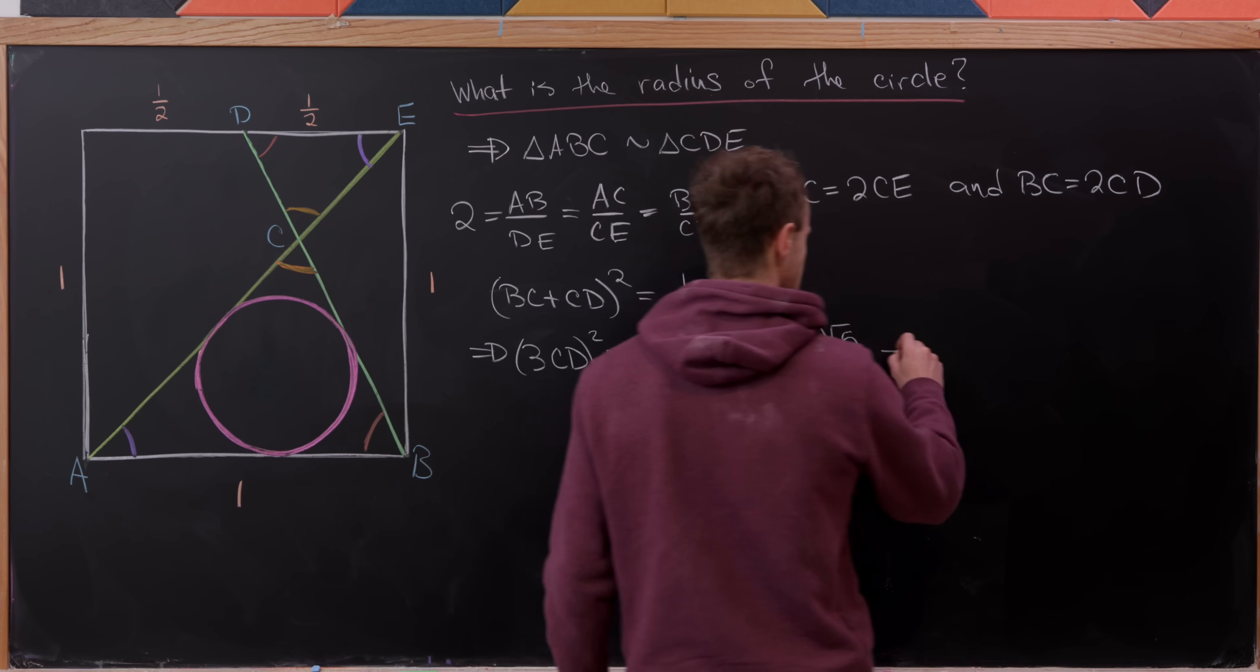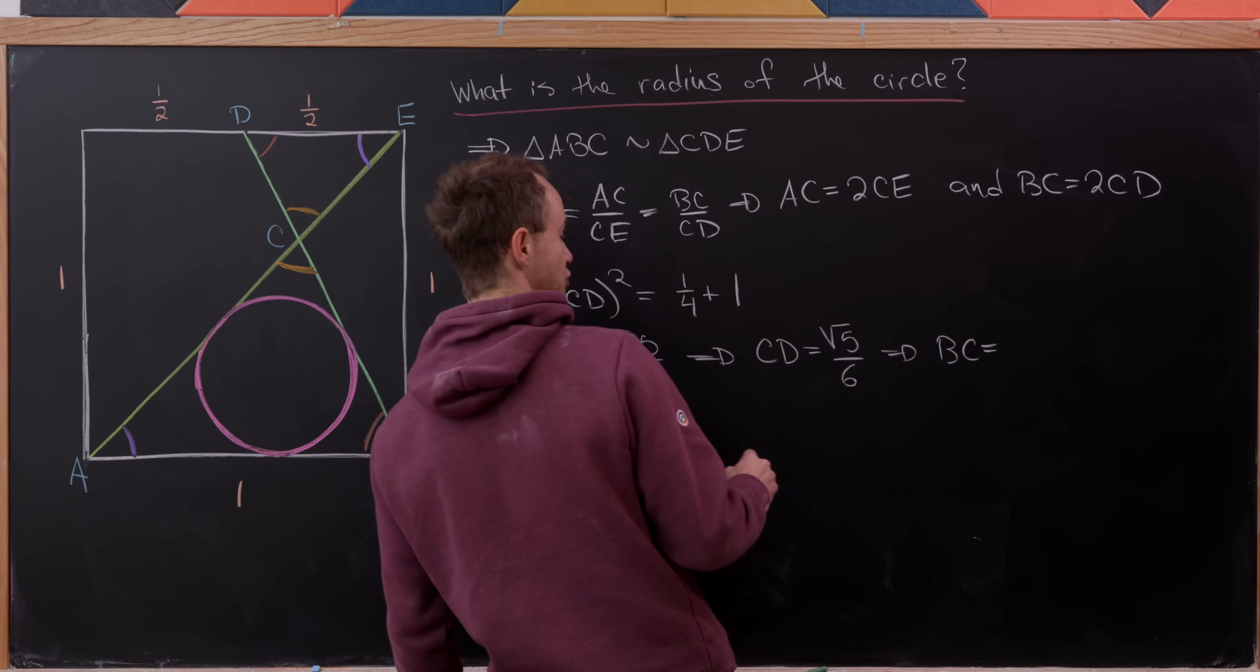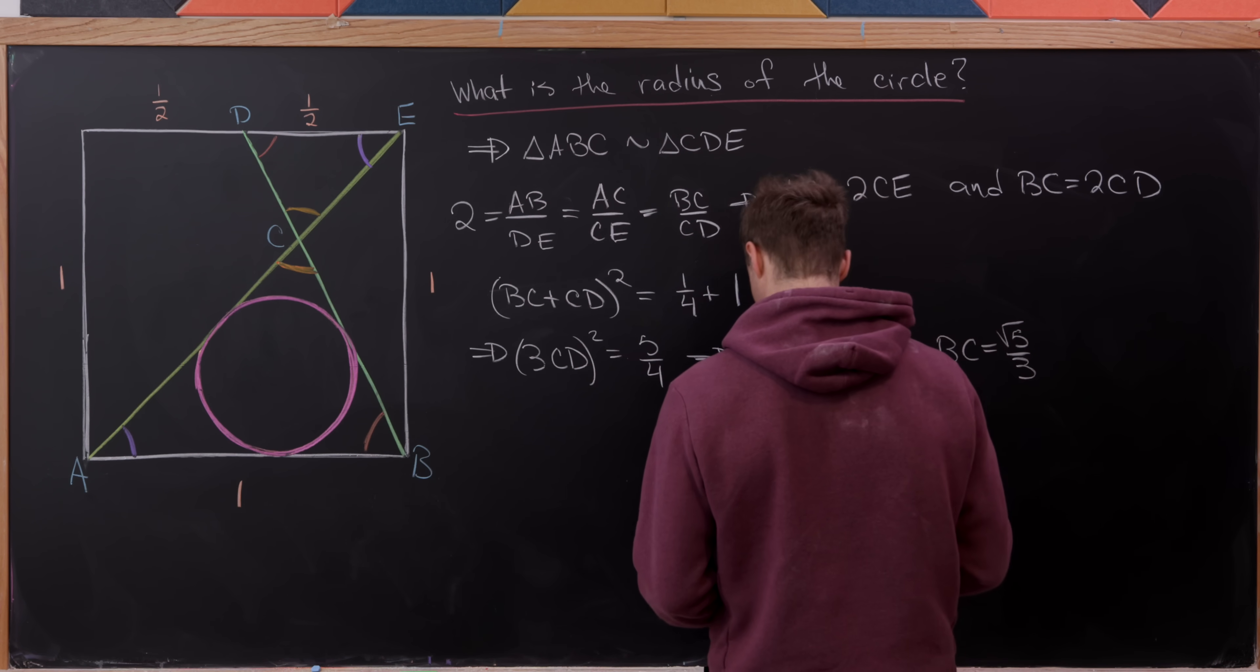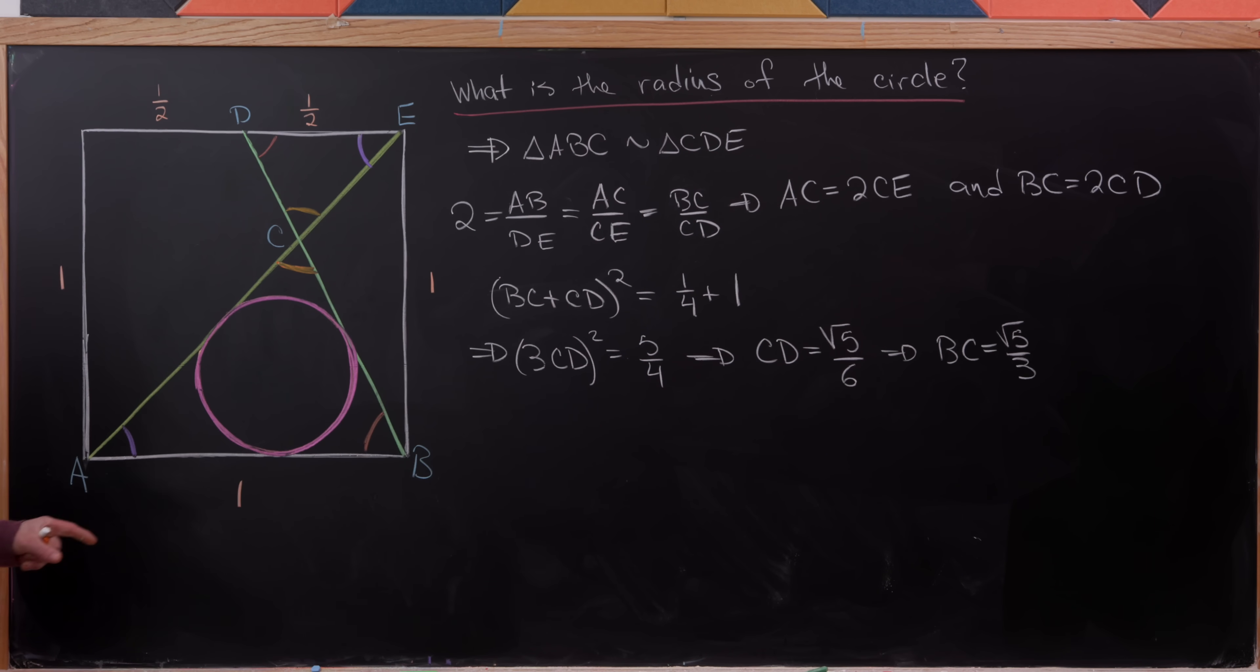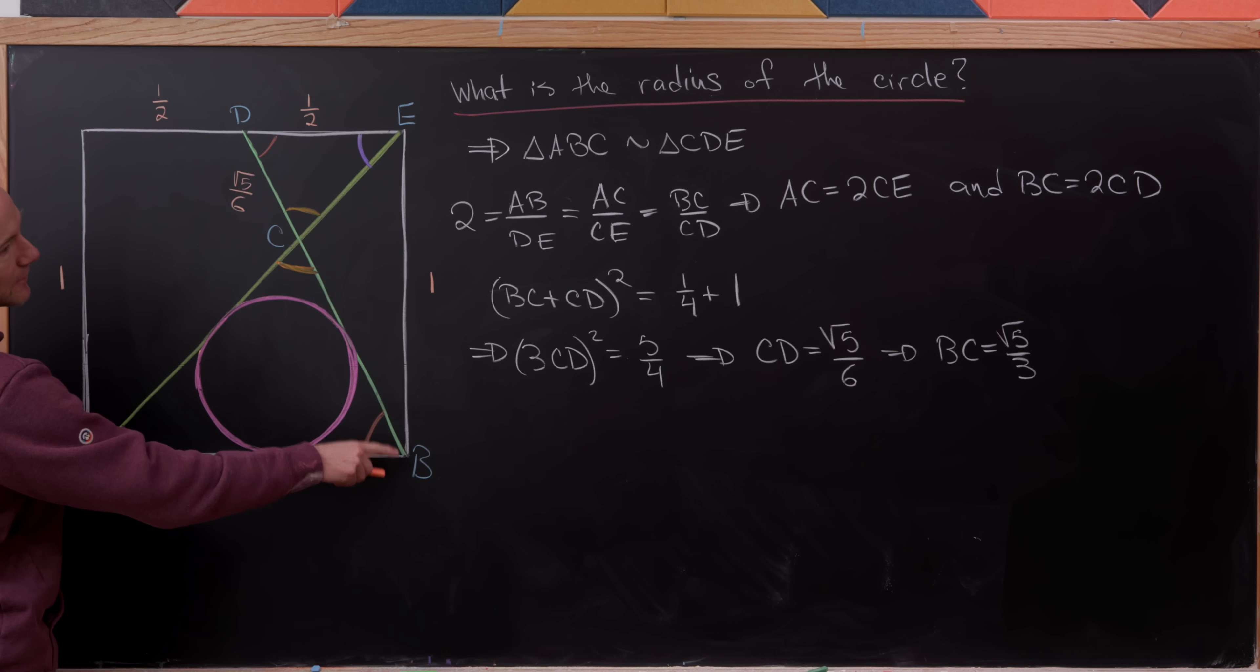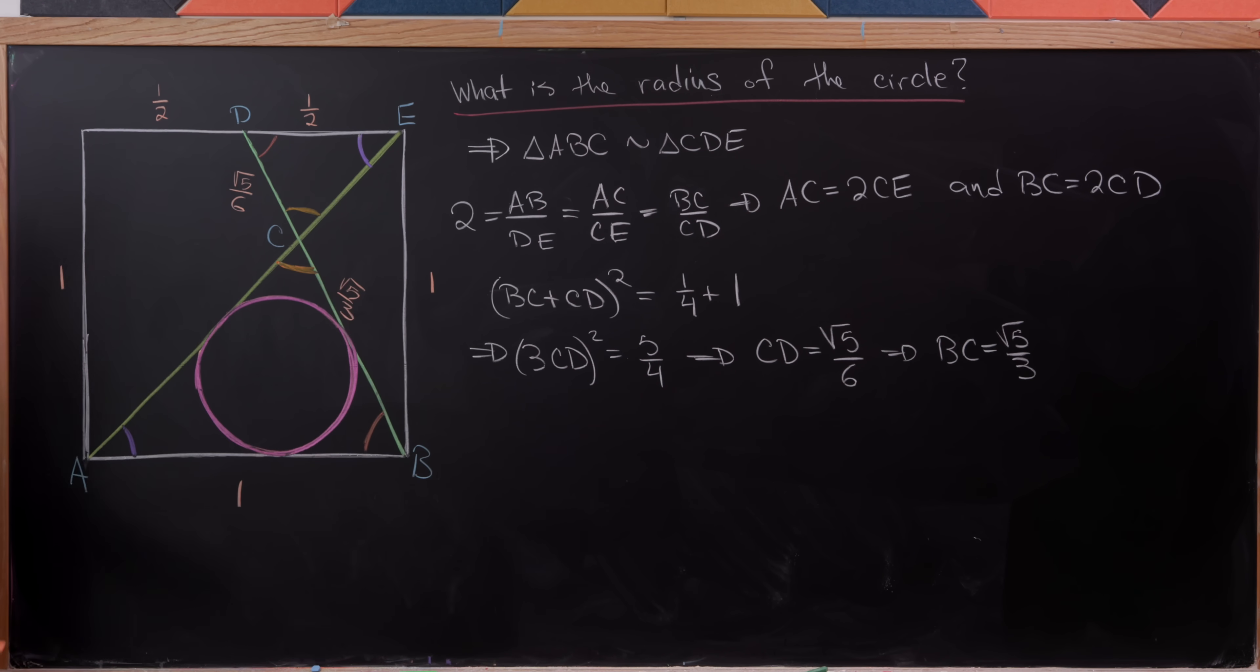But then immediately, we have that the length of BC is equal to twice that, in other words, the square root of 5 over 3. So let's write some of those in right here. So we have this length CD is the square root of 5 over 6. And then BC here is the square root of 5 over 3.